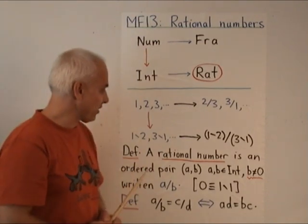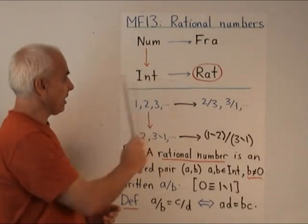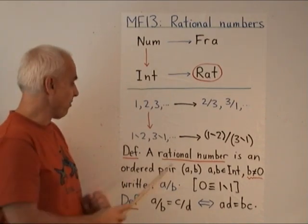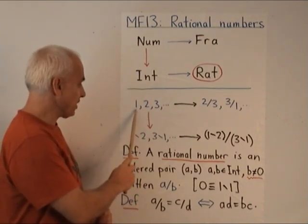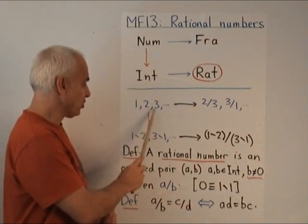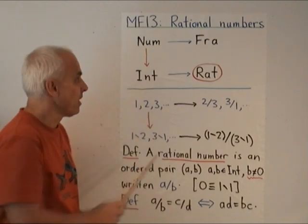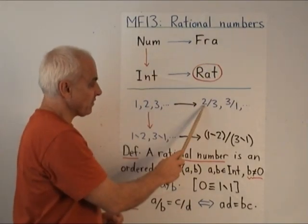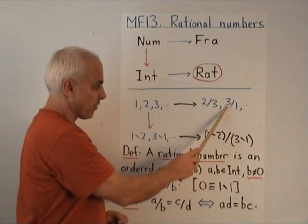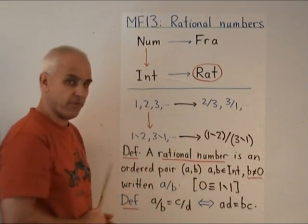Let's just make sure we understand what these various terms mean. By num, I mean natural numbers in Hindu-Arabic notation, things like 1, 2, 3, and so on. By fraction, I mean an expression of the form 2 over 3, or 3 over 1, where the constituents are natural numbers.